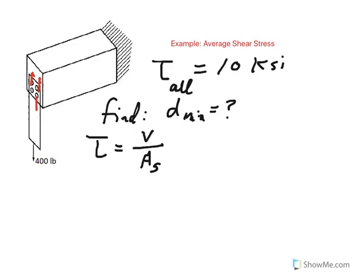So we have four of these V's. So basically we can say 4V is equal to 400. That's just the equilibrium. So V should be equal to 100 pounds. So basically we're saying that the shear load on each bolt is 100 pounds.